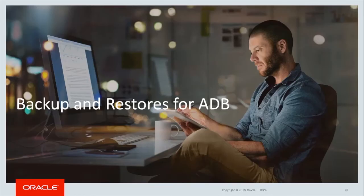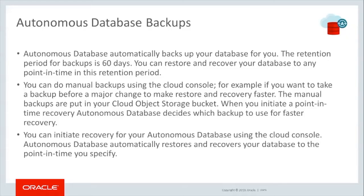Now let's look at backup and restores for Autonomous Database. Autonomous Database automatically backs up your database for you. The retention period for backups is 60 days, and you can restore and recover your database to any point in time in this retention period. You can do manual backups using the cloud console — for example, if you want to take a backup before a major change to make restore and recovery faster. The manual backups are put in your cloud object storage bucket. When you initiate a point in time recovery, Autonomous Database decides which backup to use for faster recovery.